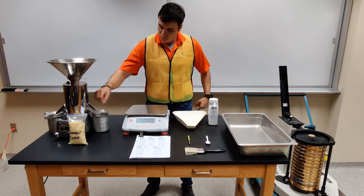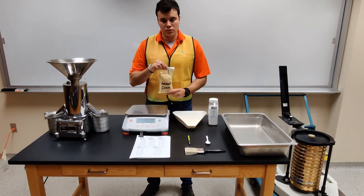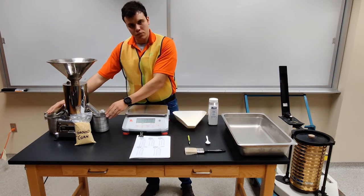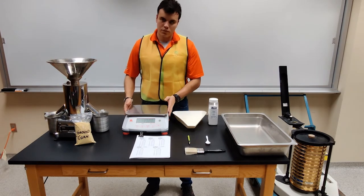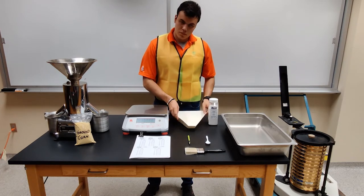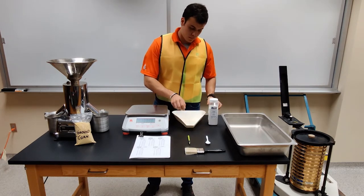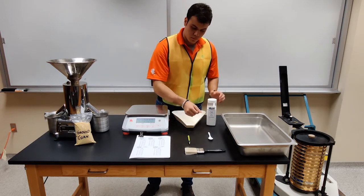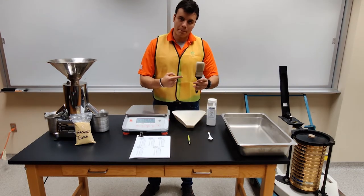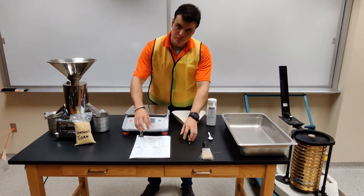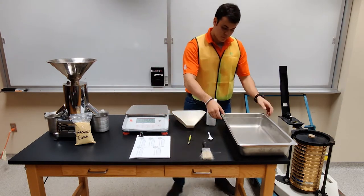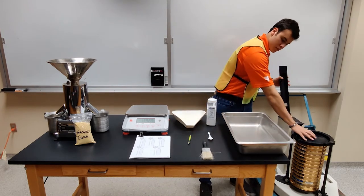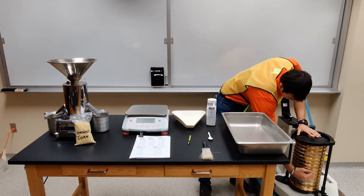The materials used to run the analysis are the following: the sample to be analyzed; a sample splitter with its cups; a scale with an accuracy of ±0.1 grams; a tray for the sample; sieving agents such as silicon dioxide and a spoon; a brush; paper and pencil; a tray used as trash; and finally, a Ro-Tap with its complete set of sieves.